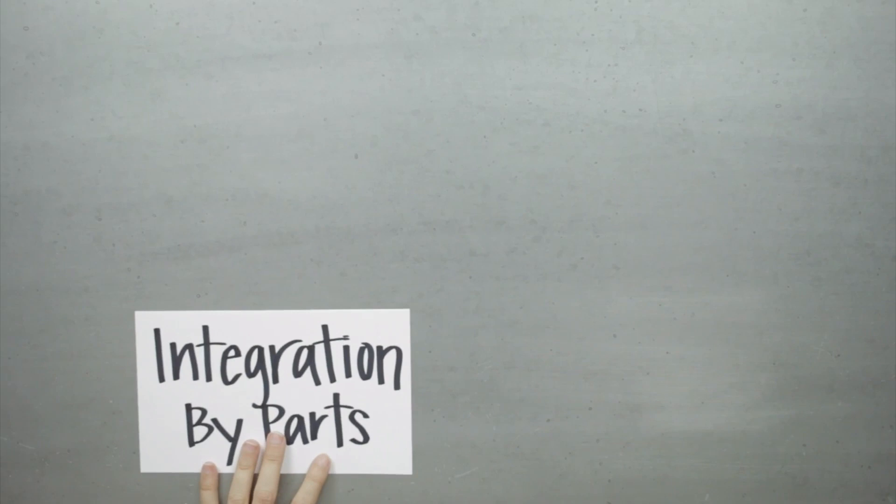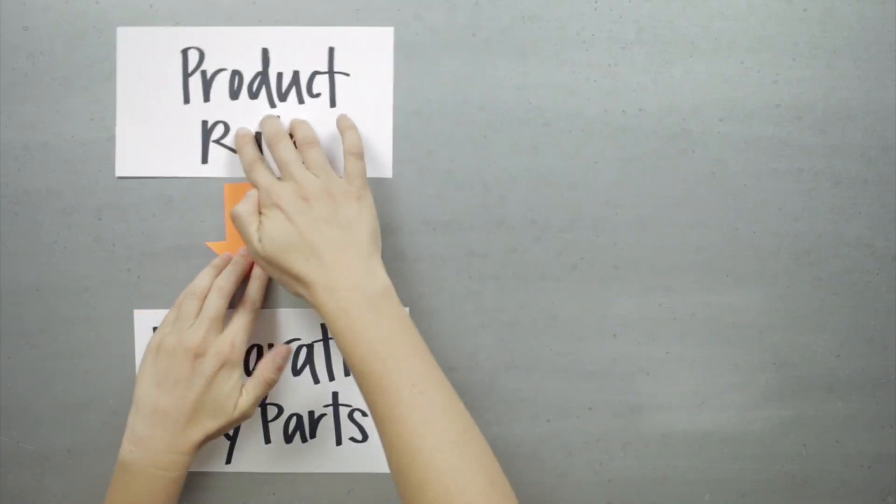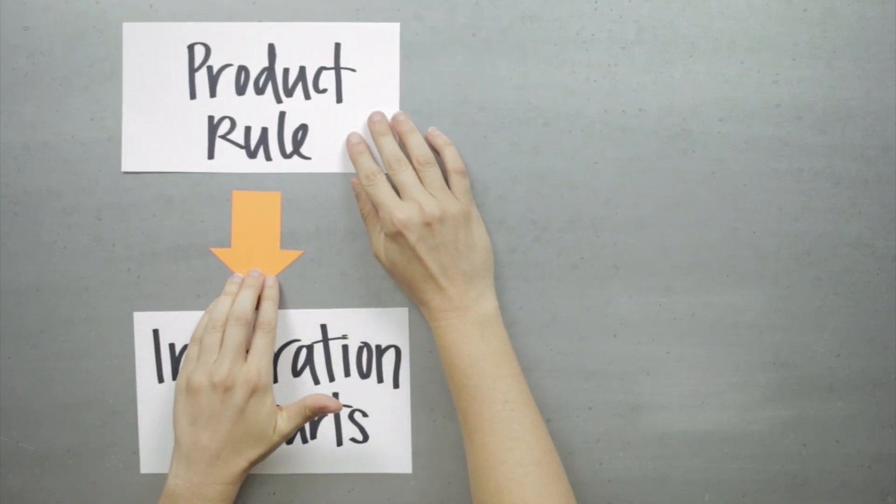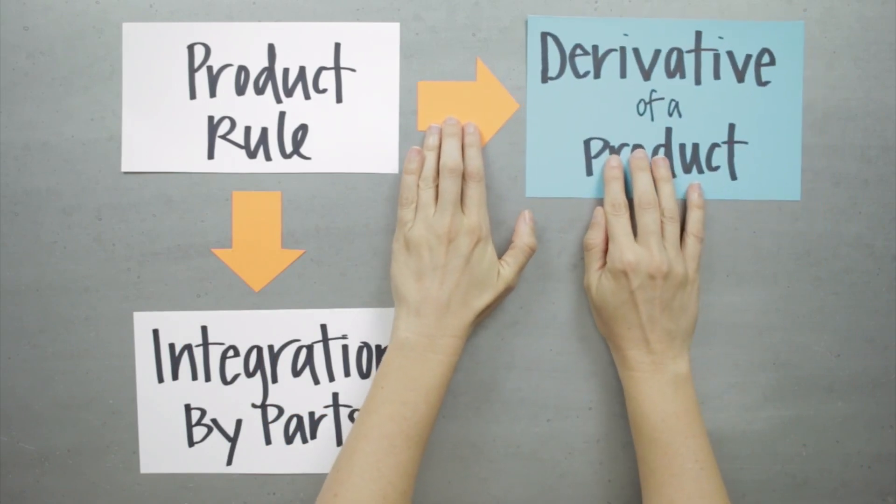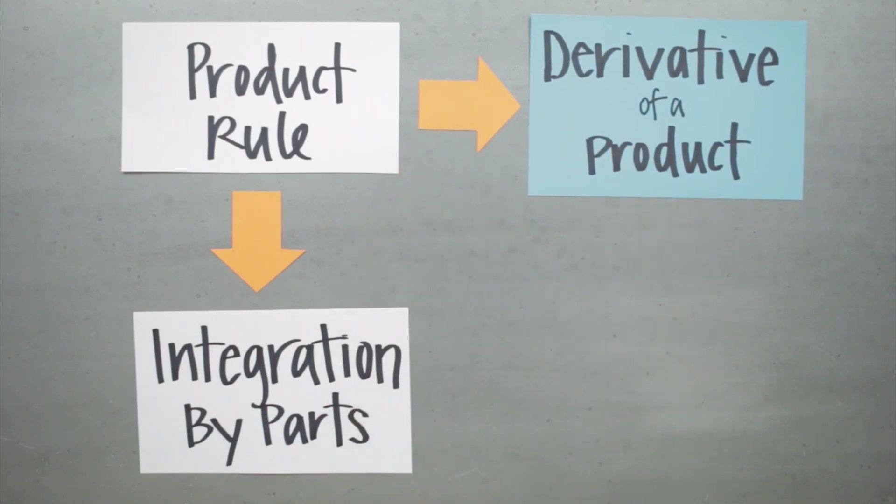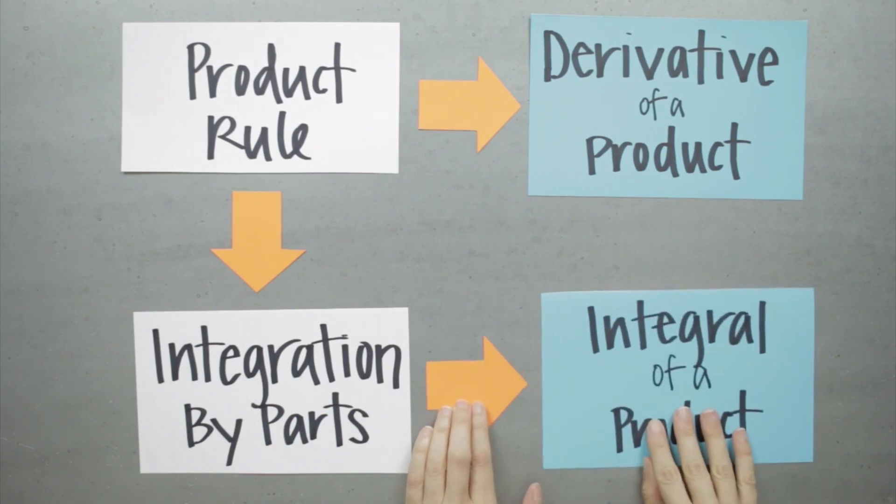Well, the integration by parts formula is actually just a consequence of the product rule for derivatives. And that should make sense to us if we really think about it. After all, the product rule tells us how to find the derivative of the product of two functions. So if we want to know how to integrate the product of two functions, it makes a lot of sense to start with the product rule. And that's exactly what integration by parts does. It shows us how to integrate the product of two functions.